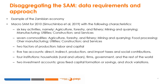A CGE model is calibrated to a social accounting matrix. Our example will use the case of the Zambian economy. We have a SAM for 2010, Simuchimba et al., 2019. We have aggregated the SAM such that it contains six key activities: agriculture, forestry and fisheries, mining and quarrying, manufacturing, utilities, construction, and services. Seven commodities, which are the same as above but including food processing.